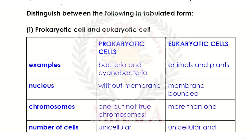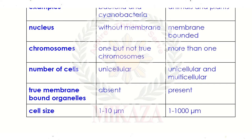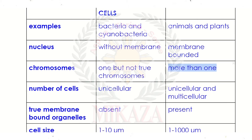Prokaryotic cells have a chromosome but its components are not complete. Eukaryotic cells have more chromosomes. Prokaryotic cells are unicellular, while eukaryotic cells can be unicellular or multicellular. Organelles such as mitochondria and ribosomes are found in the cell relative to the membrane structure.